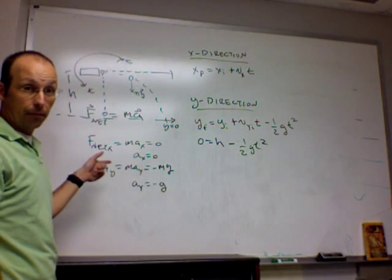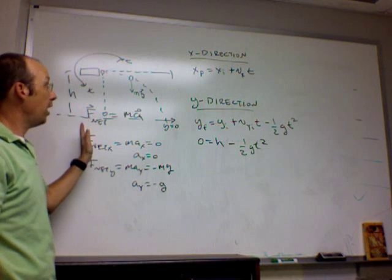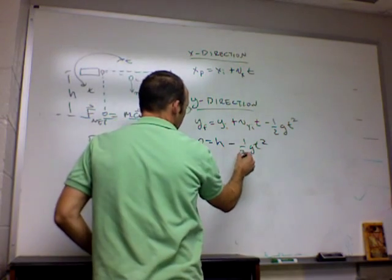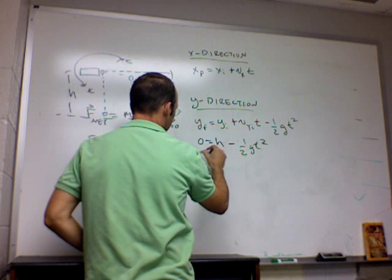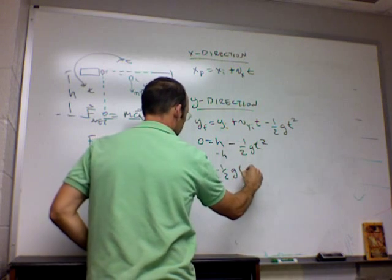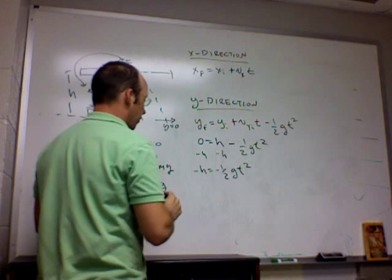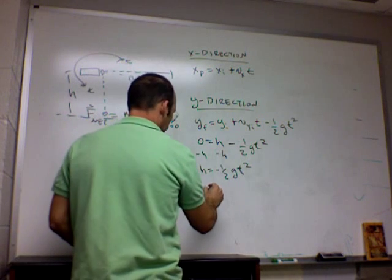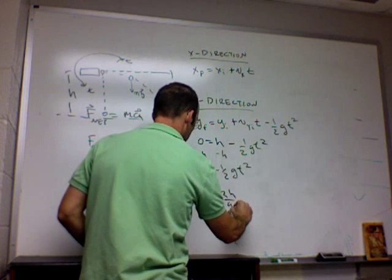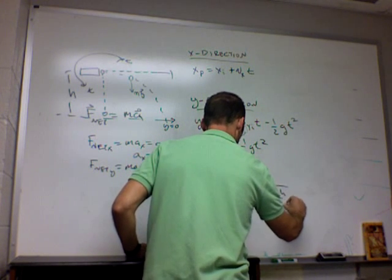Now, I can solve for the time. See, this is the trick. The y direction I can use to solve for the time, and then use that same time in the x direction. So if I subtract h from both sides, I get negative h equals negative one half g t squared, and then I can divide both sides by negative g over 2, and I get t squared equals 2h over g, t equals the square root of 2h over g.